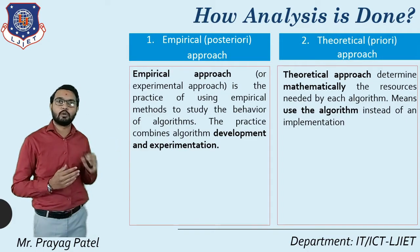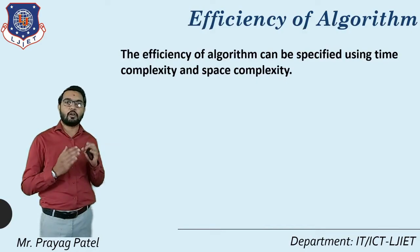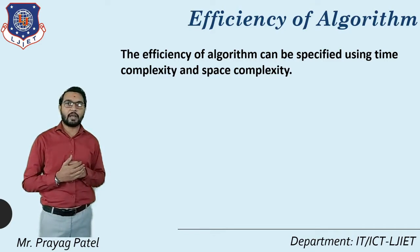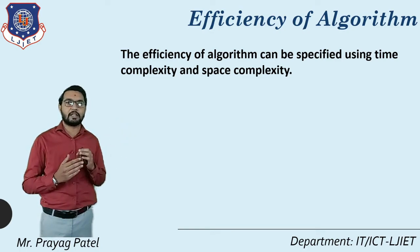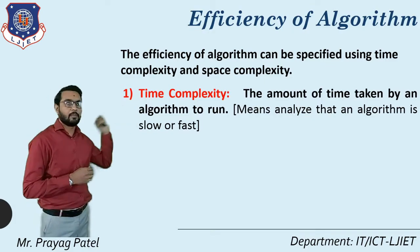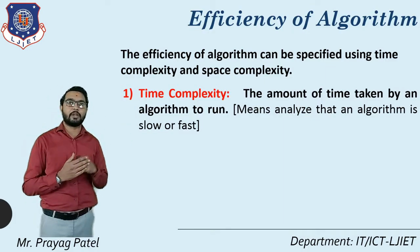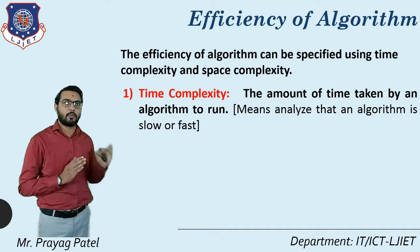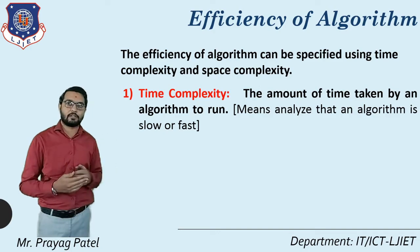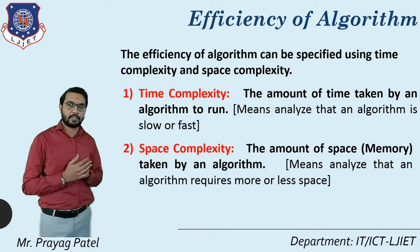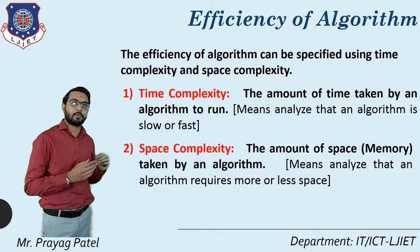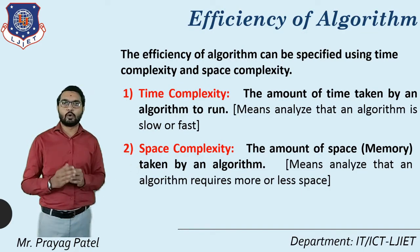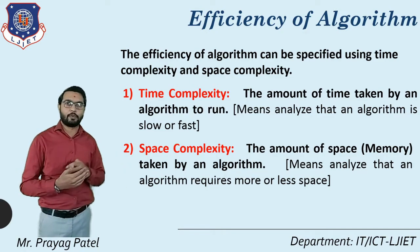Now consider the efficiency of algorithm. The efficiency of an algorithm can be specified using time complexity and space complexity. Time complexity means the amount of time taken by an algorithm to run — it identifies whether the algorithm is slower or faster. Space complexity means the amount of memory taken by an algorithm — it identifies whether an algorithm requires more or less space.